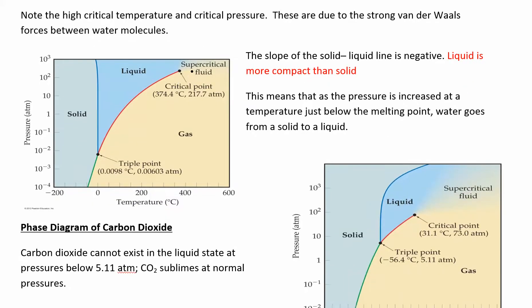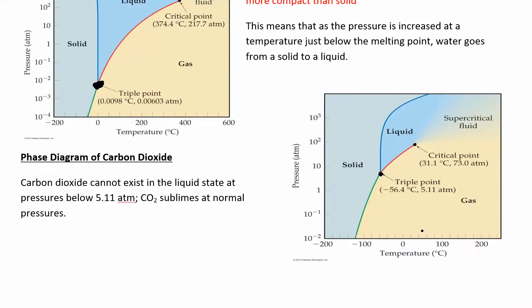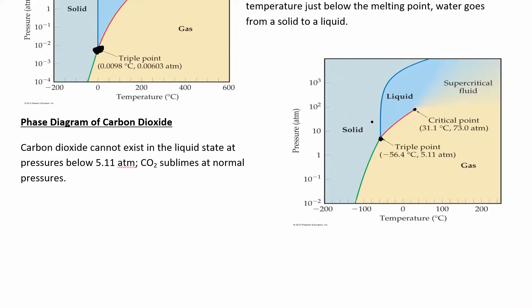You can see on the diagram where the critical point is — the point at which anything beyond that is going to be the supercritical fluid. The triple point is where all three phases of matter occur at the same time: solid, liquid, and gas all at once. You should be able to find both points. For example, here's the triple point for carbon dioxide, and here's the critical point for carbon dioxide. Every compound has its own phase diagram, which you can determine experimentally or look up.